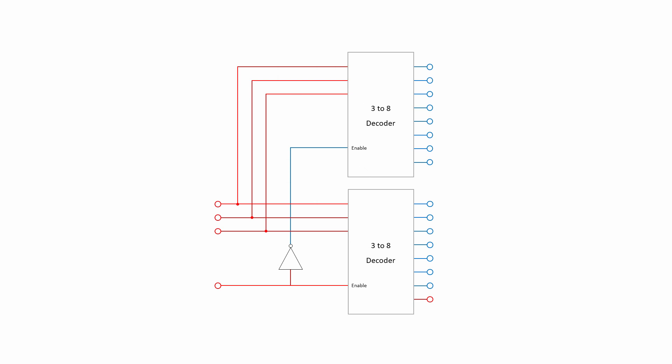Finally, it's worth mentioning that it's possible to combine decoders to make an even larger one. In this example, a pair of 3-to-8 decoders have been combined to make a 4-to-16 decoder. Notice that the NOT gate connecting them together ensures that the enabling input of one decoder is always the inverse of the other, so only one of them will ever produce an output.